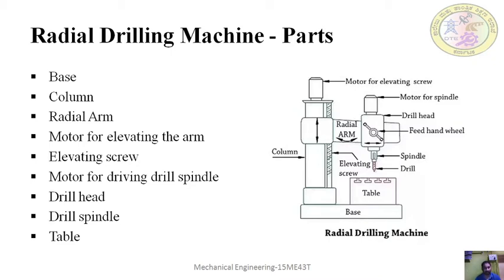The important parts of the radial drilling machine are: base, column, radial arm, motor for elevating the arm, elevating screw, motor for driving the spindle, drill head, drill spindle, and table. The base and vertical column are clearly visible in the figure. The radial arm extends in a radial direction. There is a separate motor to lift the arm automatically, an elevating screw, and another motor for rotating the spindle and raising or lowering the radial arm. The drill head contains gears to change the speed of the spindle, and the table is upon which the work is placed.